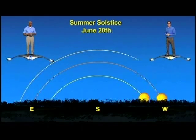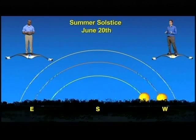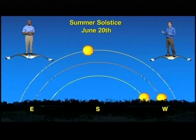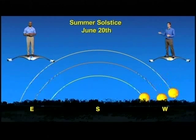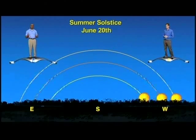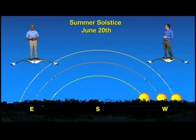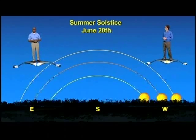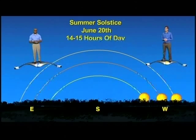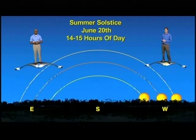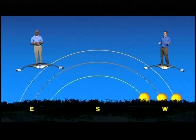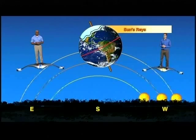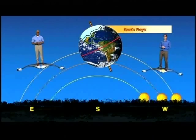What about on the summer solstice? Now our sky is set to June 20th, 2012, and we can watch the sun rise north of east, go very high in the south, and set north of west. The sun went higher still in the sky. And the hours of daylight reach a whopping 14 to 15 hours for most of the U.S., and only 9 or 10 hours of darkness. And all of this is caused by the 23 and a half degree tilt of the Earth.